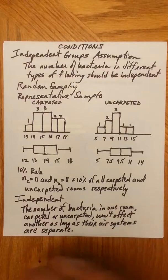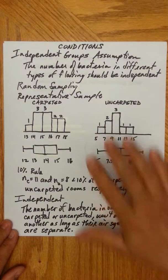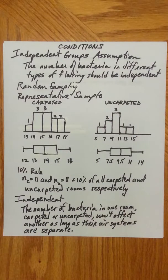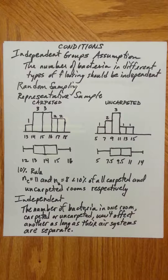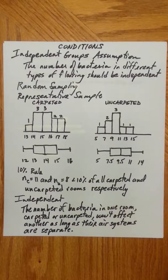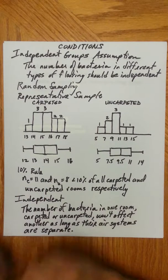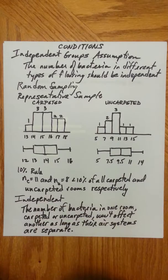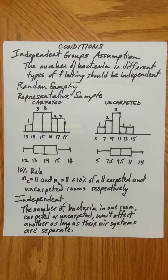We can see that for our representative sample, since we have small sample sizes — meaning less than 30 — the central limit theorem does not apply, so we have to check that our samples are relatively normal. We're a little lenient on it, but these look very nice: no outliers, everything looks pretty good. The ten percent rule is satisfied: sample size for carpeted is 11, for uncarpeted is 8, surely less than 10% of all carpeted and uncarpeted rooms respectively.